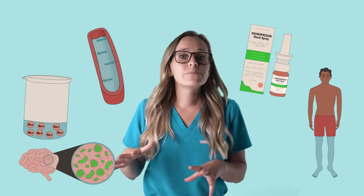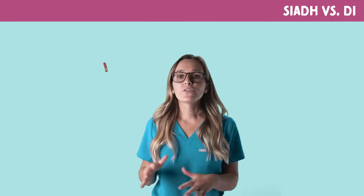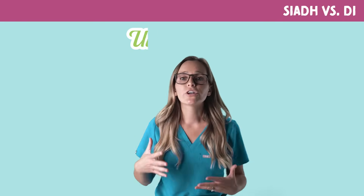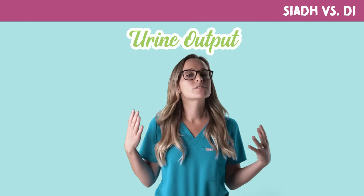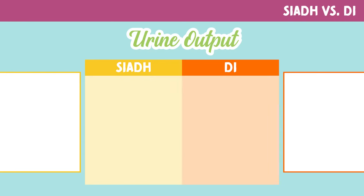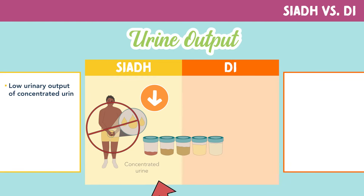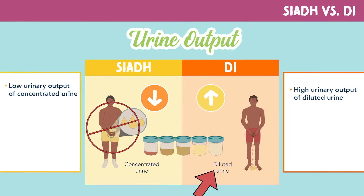Let's talk about the signs and symptoms seen in SIADH versus DI. First up is urine output — one of the most commonly tested signs and symptoms. In SIADH, they will have a low urinary output of concentrated urine, where in DI, they'll have a high urinary output of diluted urine.